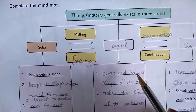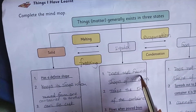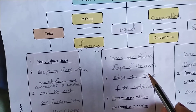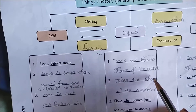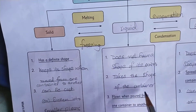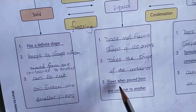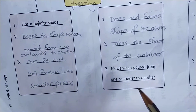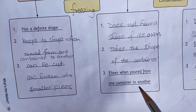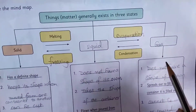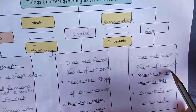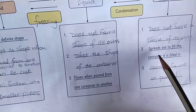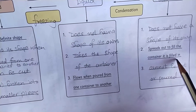Liquids — the properties of liquids. It does not have a shape of its own. It does not have a particular shape. It can spread out to fill the container it is filled in.